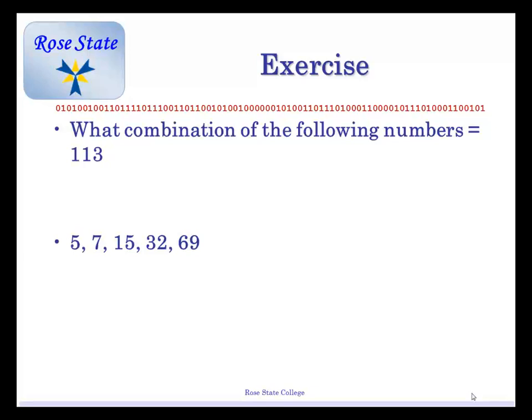Now, what combination is that? If something gets online, you can unmute your microphone and tell us. It's 5, 7, 32, and 69. Let's see: 32 and 69 is... that's 101, then plus 7 is 108, and 5 is 113. So yeah, it's 5, 7, 32, and 69. Are we okay with that? See how we did that? That's the Merkle-Hellman knapsack. That's it.